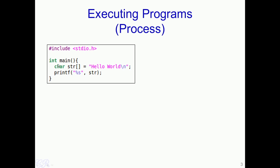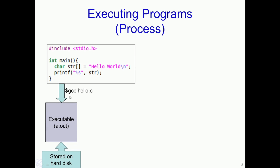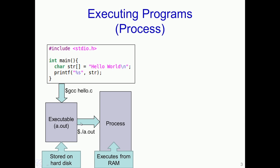Consider this particular program written in C. This program prints hello world onto the screen. In order to compile and run this program, we first need to use a compiler such as GCC and specify the C code name such as hello.c, and what we will get is an executable, in this case called a.out. This executable is stored on the hard disk. In order to run this particular program, we specify a command like dot slash a.out and it results in a process being created in the RAM.